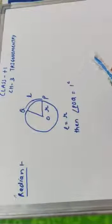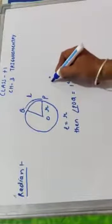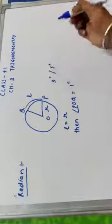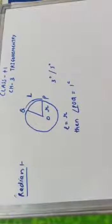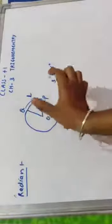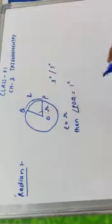Suppose a circle with radius r. OP be a radius and OQ is another radius. Then QP is the length of arc, say L. If L is equal to r, then angle POQ is equal to 1 radian. If the radius and length of arc are the same, then the angle will be equal to 1 radian.